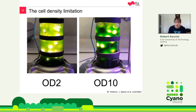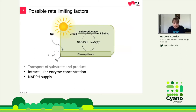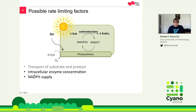Regarding cell density limitation: at optical density 2, light distribution looks nice and even. But at optical density 10, which is only 2.4 g/L, you already see the flow tracking light. This is by no means a high cell density — E. coli can work easily at 40 g/L. So we are quite limited. The two factors that can limit our reaction are: intracellular enzyme concentration and, of course, NADPH supply. These are the two aspects to look at.